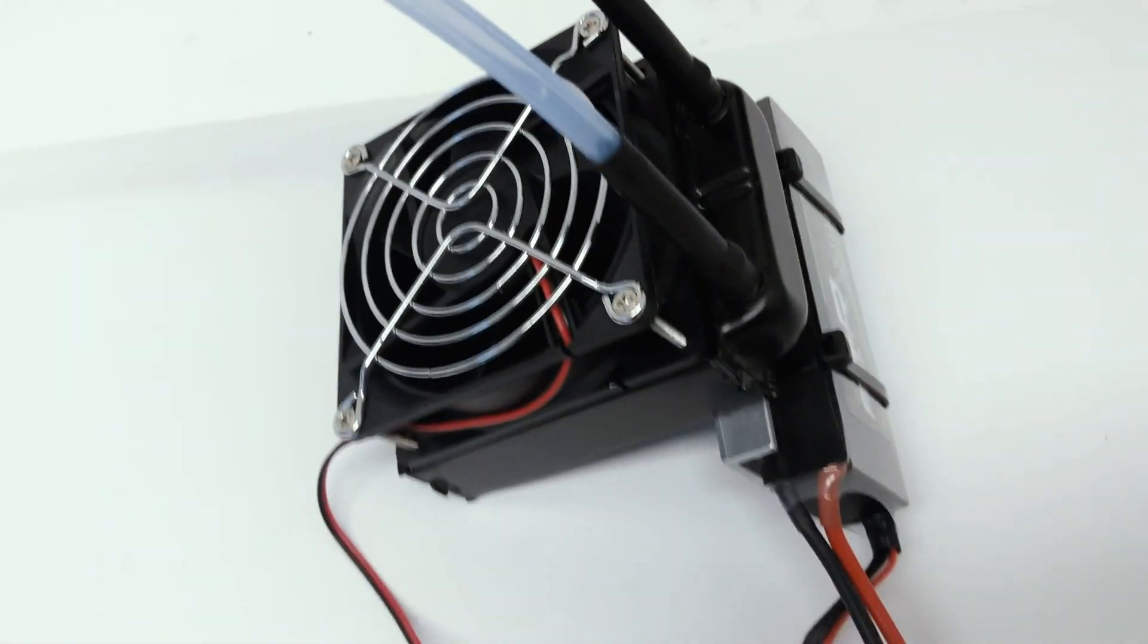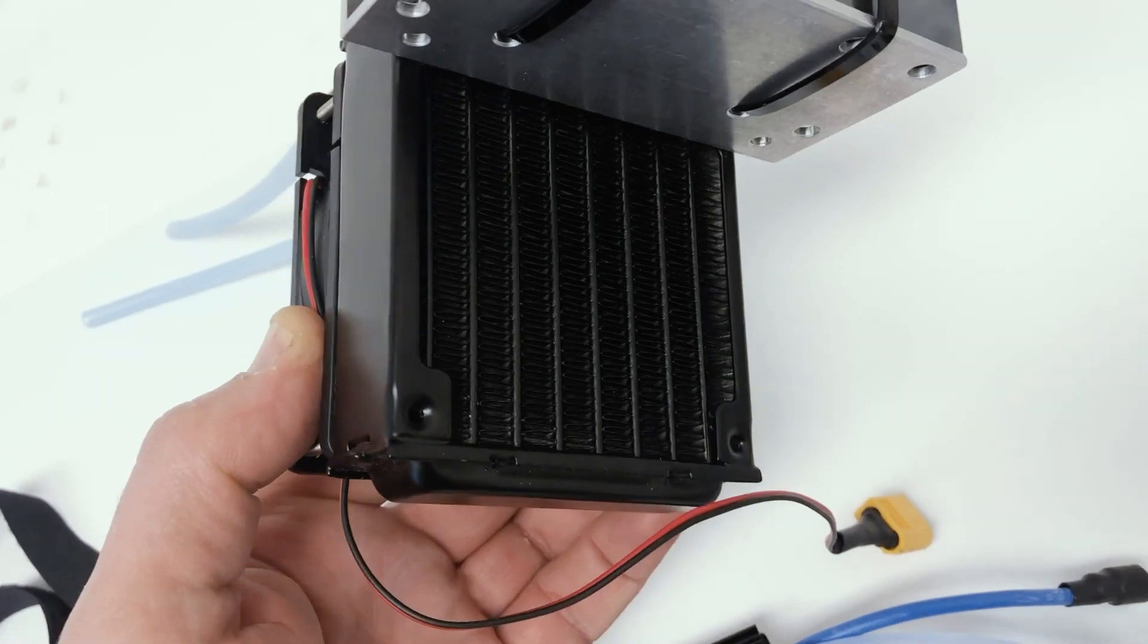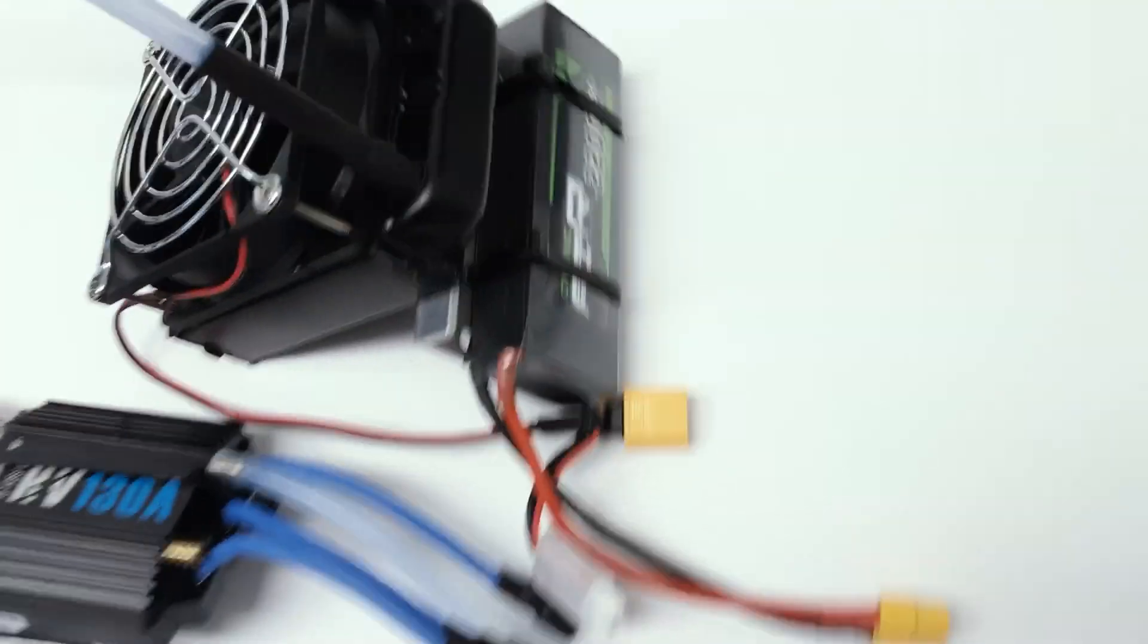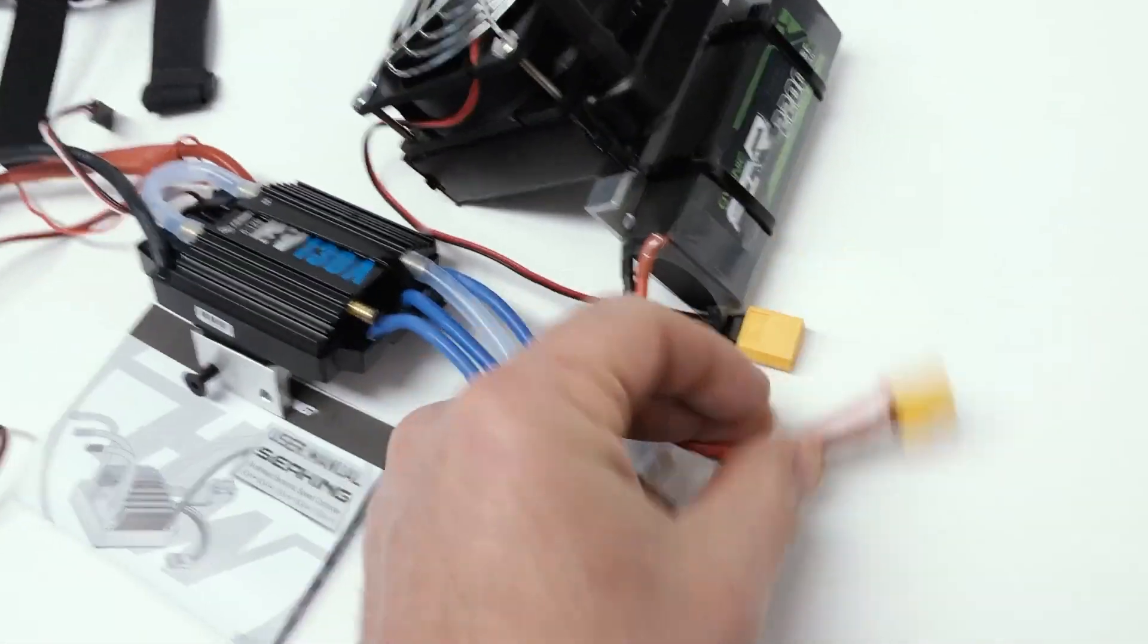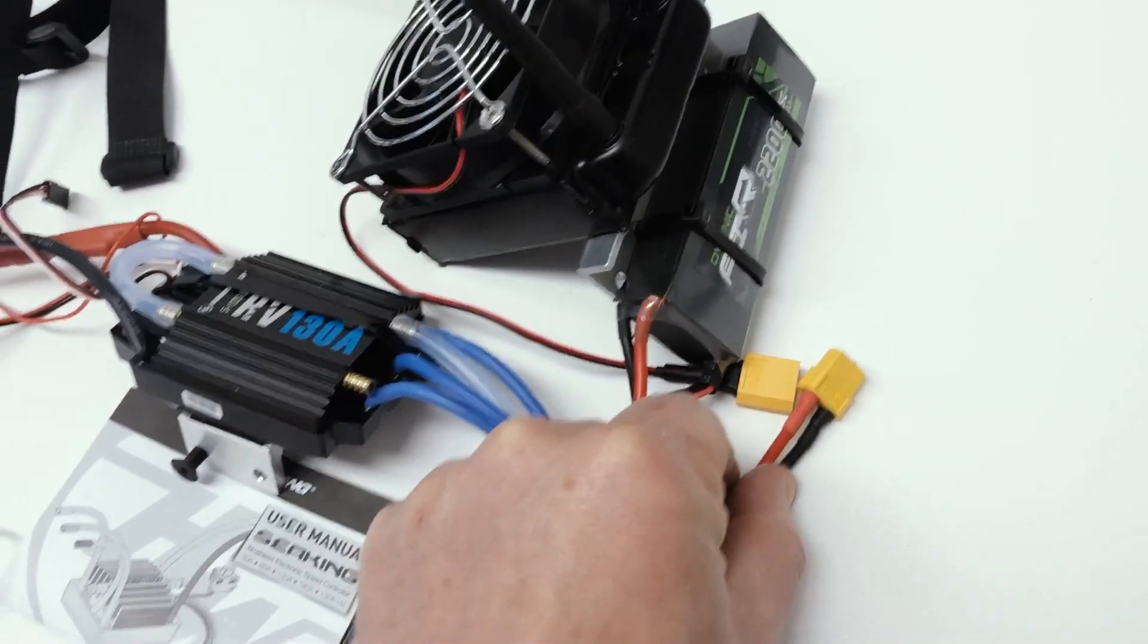There's also a whole radiator system. So you got your fan, the water's going to go through there, get cooled off by the fan, get circulated back through the ESC, through the motor. It also has its own battery that you just plug in when you want that fan to run, so you don't have to tap it into anything else.